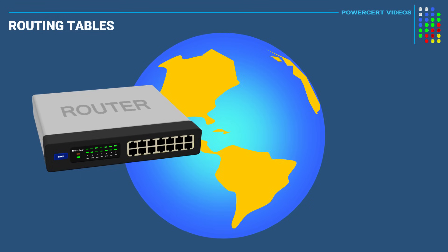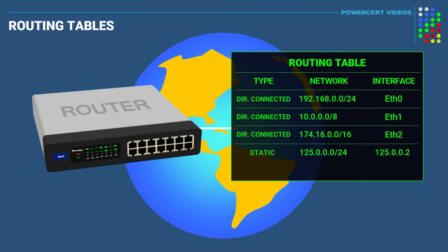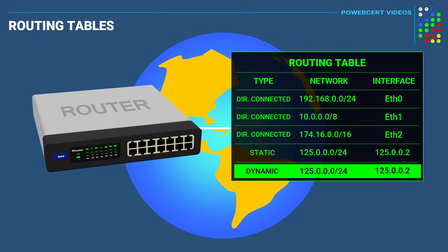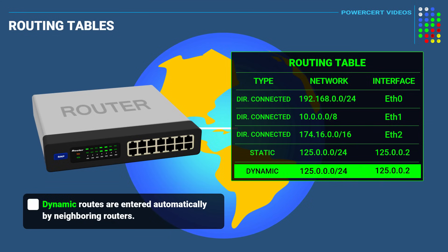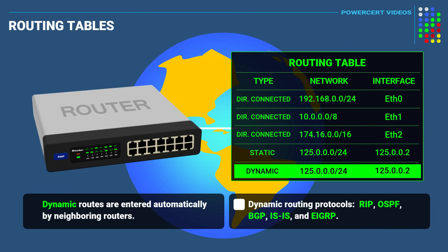Now let's talk about a third way that a routing table is populated: dynamic routes. Dynamic routes are similar to static routes, but the difference is how the routes are entered into the routing table. Where static routes are entered manually, dynamic routes are entered automatically by neighboring routers, and they do this by using one or more dynamic routing protocols. These dynamic routing protocols are RIP, OSPF, BGP, ISIS, and EIGRP, which I will make a separate video talking about.